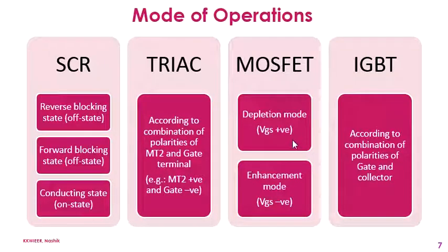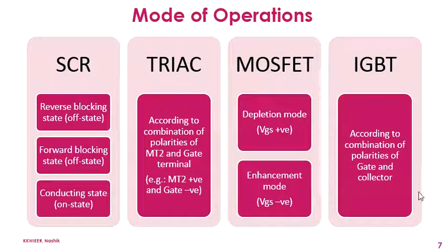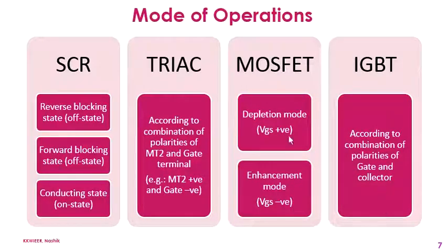MOSFET operates in two modes: depletion mode, where the gate-source voltage is positive, and enhancement mode, where the gate-source voltage is negative. In the case of IGBT, similar to TRIAC, it operates according to the combination of polarities — either positive or negative — given to the gate and collector terminal. This covers the modes of operation for all four semiconductor devices.